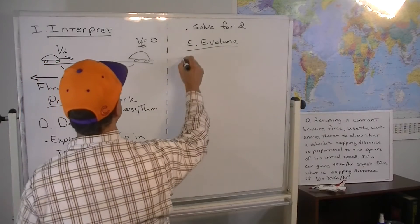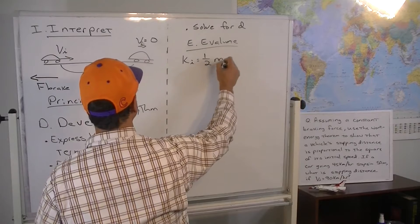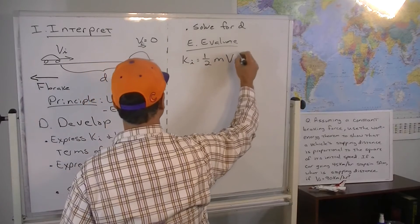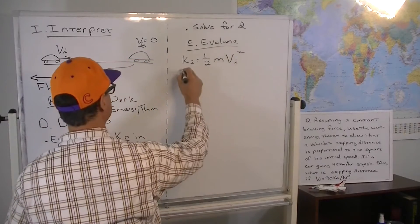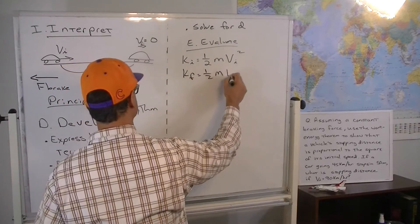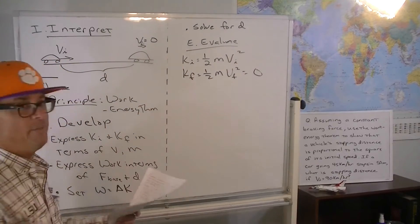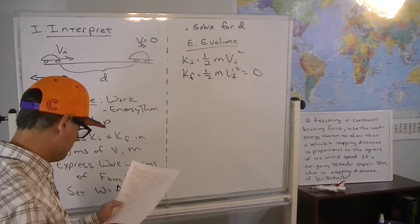So, K initial is one half the mass of the car times the initial speed squared. K final is one half the mass times the final speed squared. And that is zero because it's stopping. Right? It's not over until it stops.